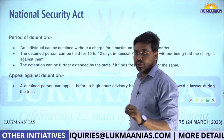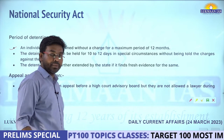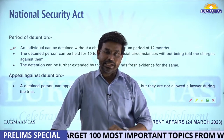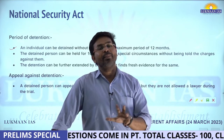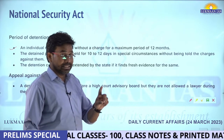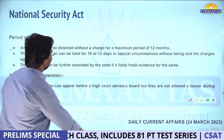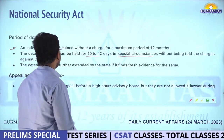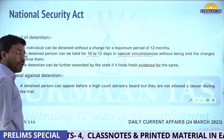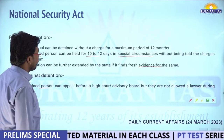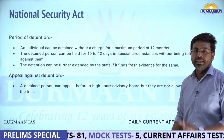Article 22 of the Constitution specifies a maximum of three months for preventive detention. However, an individual can be detained without charge for a maximum of 12 months with advisory board approval. A detained person can be held for 10 to 12 days in special circumstances without being told the charges against them. A detained person can appeal before a High Court advisory board but is not allowed a lawyer during the trial.